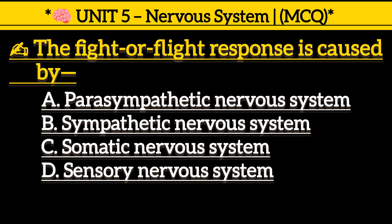The fight or flight response is caused by: Option A, parasympathetic nervous system. Option B, sympathetic nervous system. Option C, somatic nervous system. Option D, sensory nervous system.